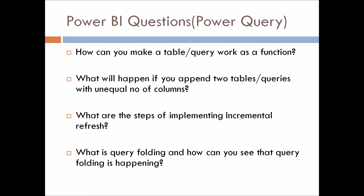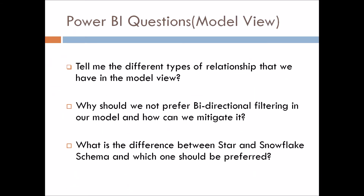Let's move ahead to the Model View section. The first question is: tell me the different types of relationships we have in the model view. Second: why should we not prefer bi-directional filtering in our model, and how can we mitigate it? The last one is: what is the difference between a star and a snowflake schema, and which one should be preferred? This question is related to data warehousing concepts, so you should have decent knowledge of data warehousing as well.